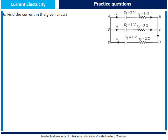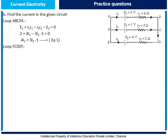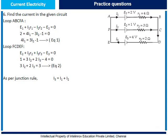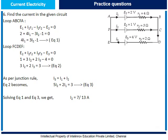Question 6: Find the current in the given circuit. Applying Kirchhoff's rule to loop ABCFA: E1 plus I1 R1 minus I2 R2 minus E2 equals 0, giving equation 1: 4I1 equals 3I2 minus 1. For loop FCDF: E2 plus I2 R2 plus I3 R3 minus E3 equals 0, giving equation 2: 3I2 plus 2I3 equals 3. By junction rule, I3 equals I1 plus I2, giving equation 3: 5I2 plus 2I1 equals 3. Solving equations 1 and 3: I2 equals 7/30 A, I1 equals 2/30 A, and I3 equals 9/30 A.